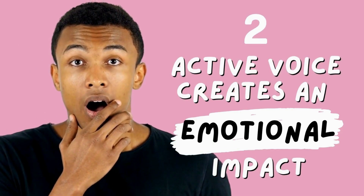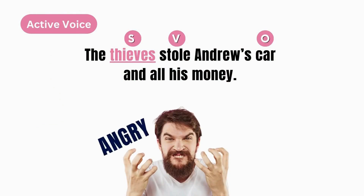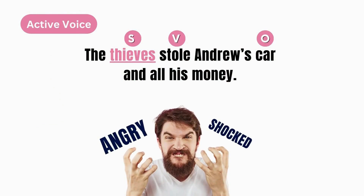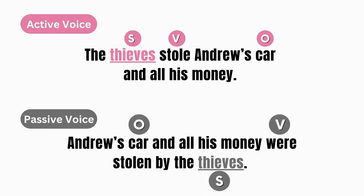Active voice creates an emotional impact. For instance: 'The thieves stole Andrew's car and all his money.' Don't you feel angry and shocked as soon as you read this? Now compare your emotional reaction if you write this in passive voice: 'Andrew's car and all his money were stolen by the thieves.' The passive voice creates a more detached feeling. That's why it's called passive, which is not what we want when trying to engage our readers with our argument and keep them reading.